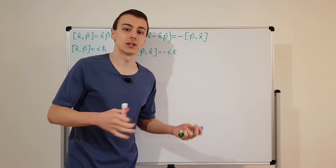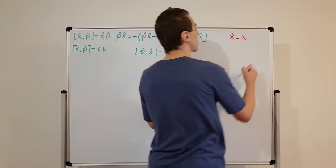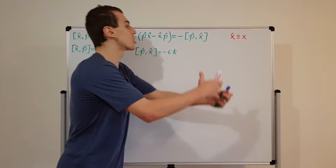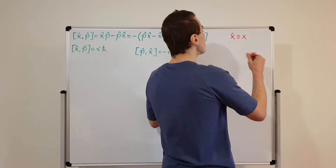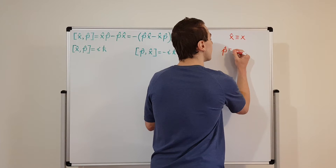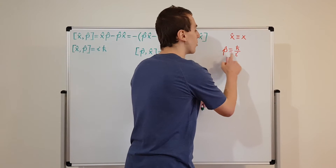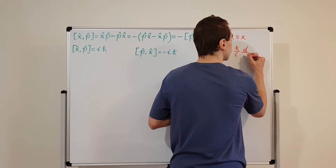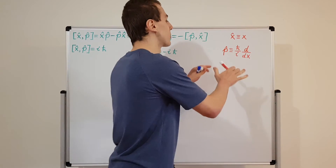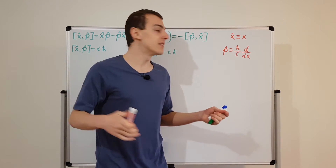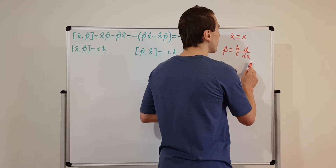First, let's write down the definitions of the position and momentum operators, working in the position representation. In the position representation, the position operator is defined as just multiplying by x — when we act on a test function with the position operator, it's the same as multiplying by x. The momentum operator p-hat is defined as ℏ/i, or equivalently minus iℏ, times d/dx. We write an ordinary derivative since this is a purely one-dimensional case; for higher dimensions or time dependence, this becomes a partial derivative.